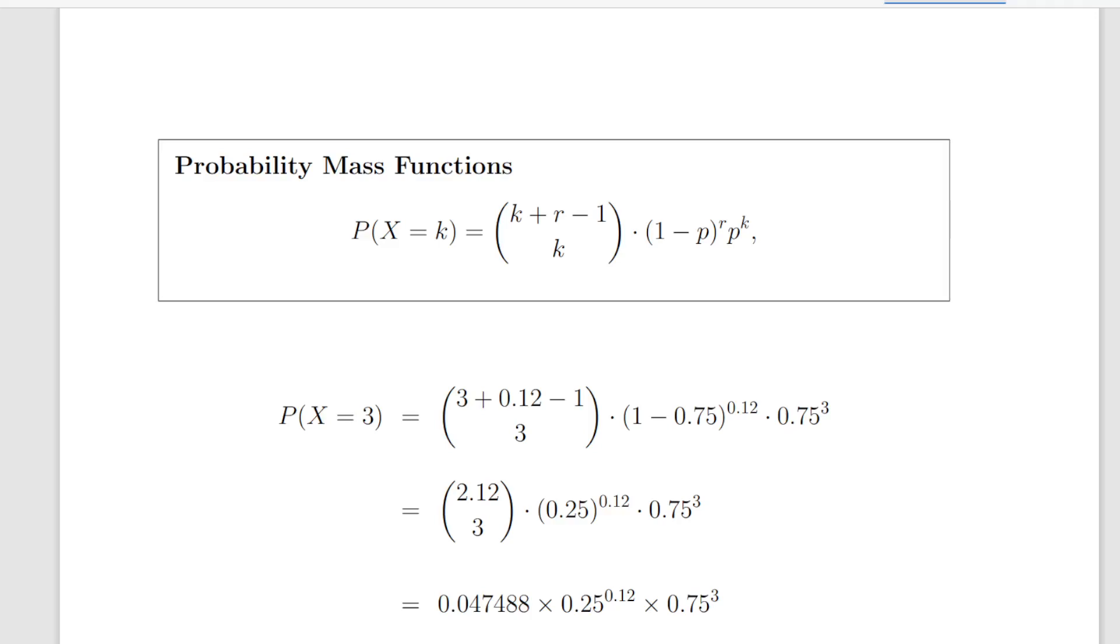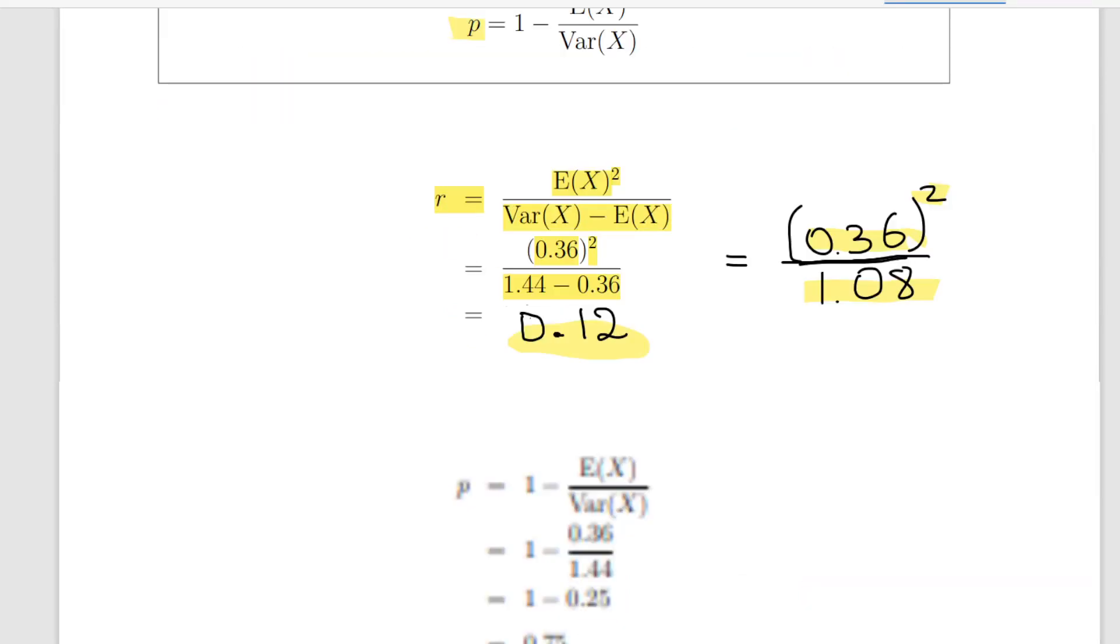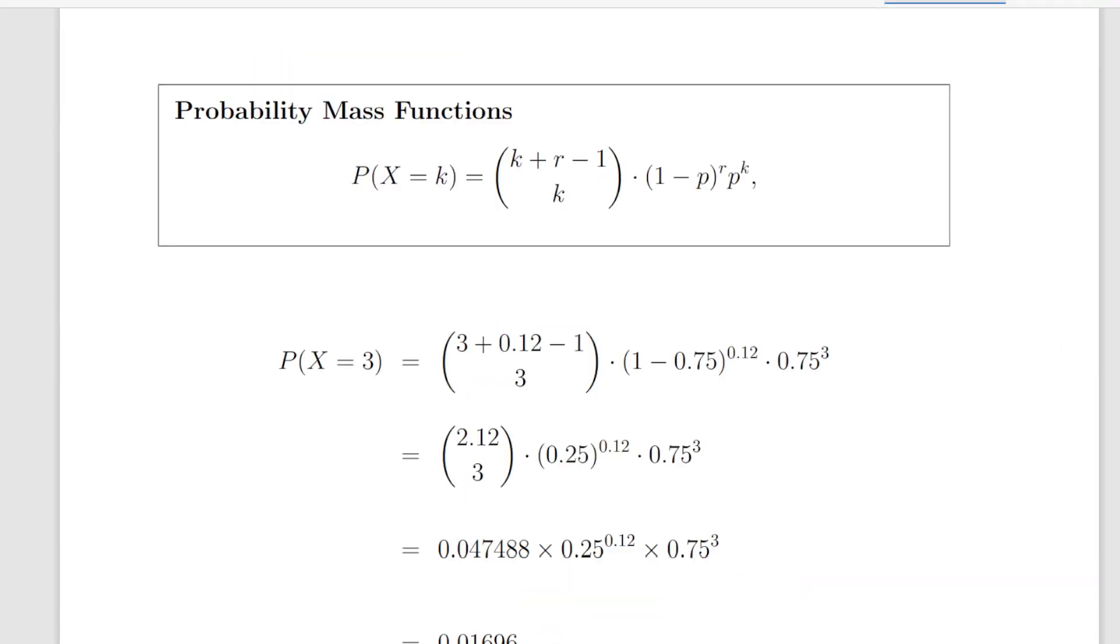In this particular case, just for the sake of extra clarity, I just used the most straightforward version of the method of moments, and picked the probability mass function that corresponded to that. But there are other versions of the probability mass function, where we have 1 minus p to the power of k times p to the power of r, so on and so forth. So just watch out for that.